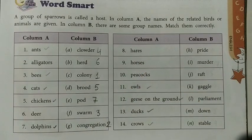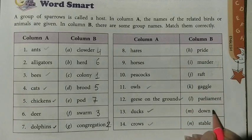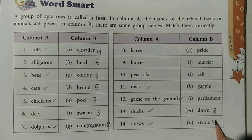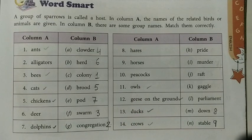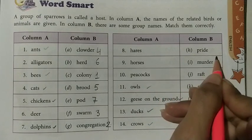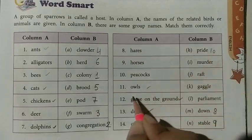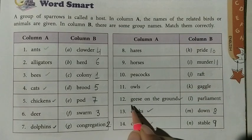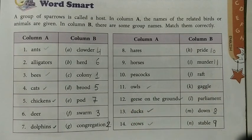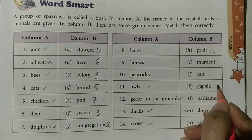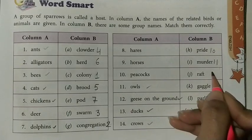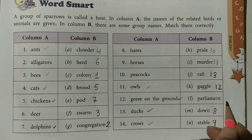Continuing column B group names: hares, dogs, horses — stable, peacocks — pride, owls — murder, geese on the ground — gaggle, ducks — raft, and crows — parliament. Parliament is a very unique name for a group of crows. Learn these names as well.